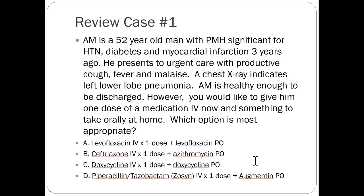Choice D is Zosyn (piperacillin-tazobactam) plus augmentin PO. This is inappropriate for a number of reasons — you wouldn't give somebody a dose of Zosyn and send them home on something else; if you're giving Zosyn, they're probably coming into the hospital for a more serious infection. The bigger problem is you're missing atypical coverage. However, you could give augmentin plus azithromycin, and that actually would be appropriate for community-acquired pneumonia.